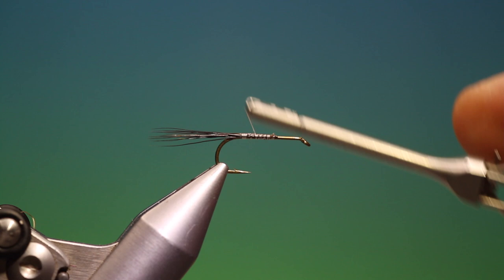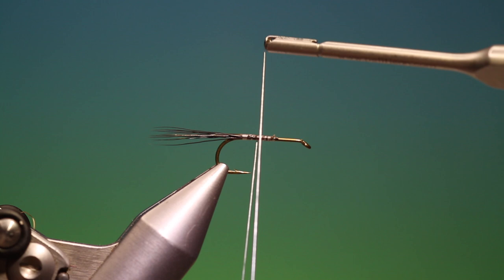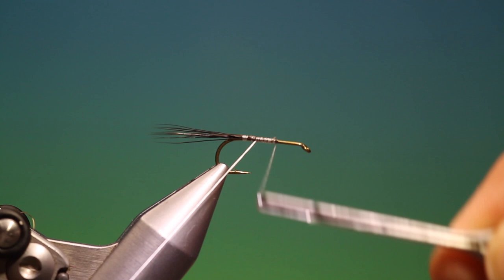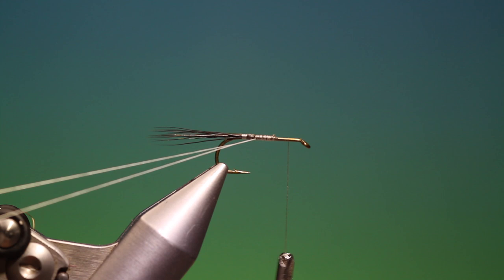If you're using regular tying thread, what you have to do here is make that dubbing loop double. Otherwise it will break when you spin the deer hair. So we go forward to there. We've got the dubbing loop. Because I'm spinning deer hair, I need a heavy dubbing spinner. Just hang that out the way.